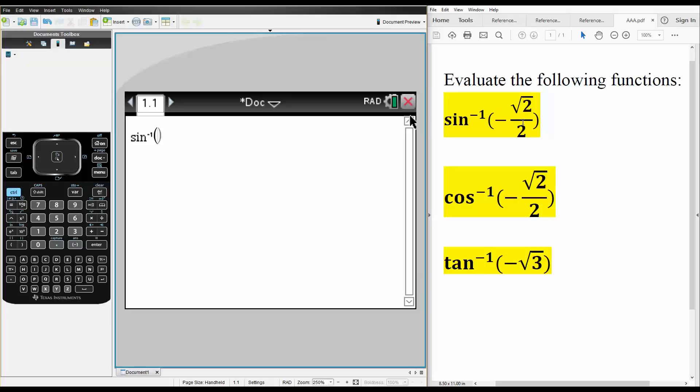And simply, I'm going to write what we have. So minus, we do control division, the square root of 2, divided by 2, and we hit enter.